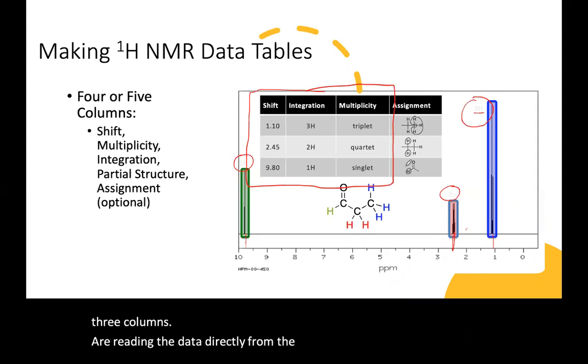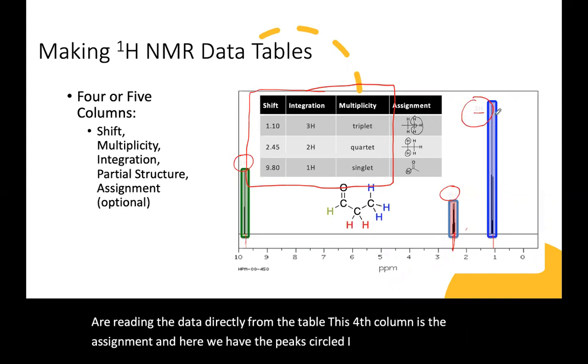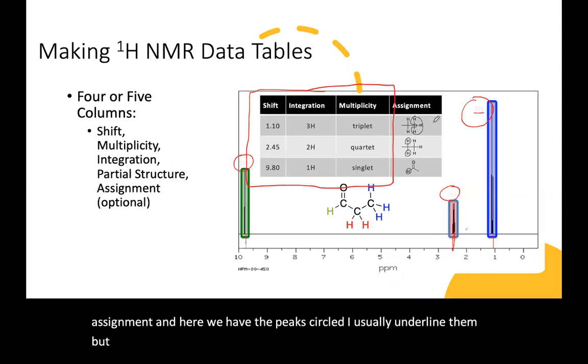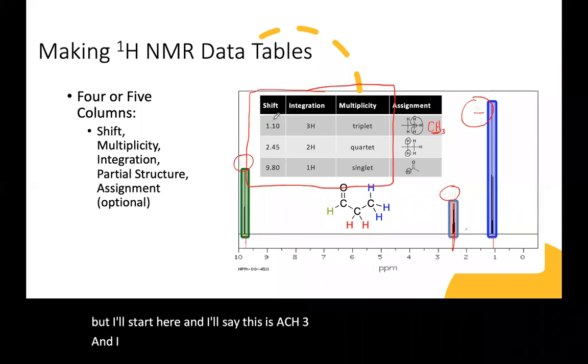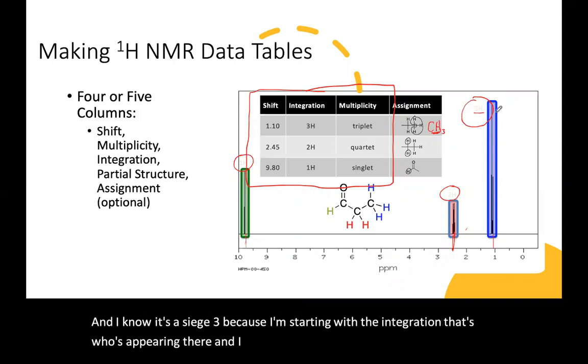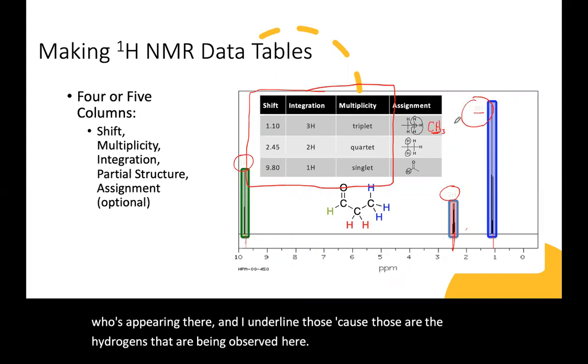So these first three columns are reading the data directly from the table. This fourth column is the assignment. And here we have the peaks circled. I usually underline them. But I'll start here and I'll say this is a CH3. And I know it's a CH3 because I'm starting with the integration. That's who's appearing there. And I underline those because those are the hydrogens that are being observed here.